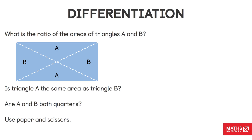So this question: we have a rectangle, and you have some of them on your table. You should have lots of these to play around with. My question is: what's the ratio of the areas of triangles A and B? Can you work out the ratio and can you prove it?